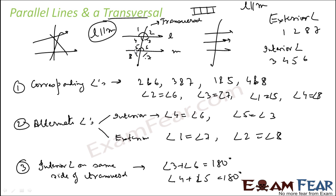Please note that interior angles on the same side of the transversal are also referred to as consecutive interior angles or co-interior angles. They are sometimes also called aligned angles or simply interior angles. Co-interior angles is the better term. So to summarize: corresponding angles are equal, alternate angles are equal, and co-interior angles have a sum of 180 degrees.